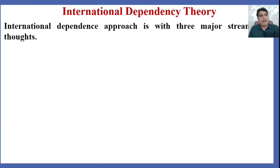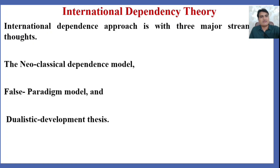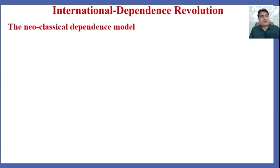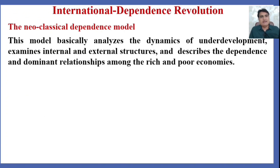The International Dependence approach has three major streams of thought: the new classical dependence model, false paradigm model, and the dualistic development thesis. The new classical dependence model analyzes the dynamics of underdevelopment.